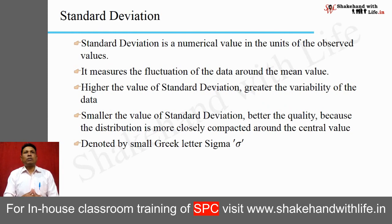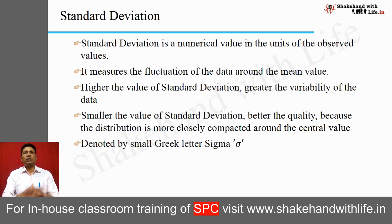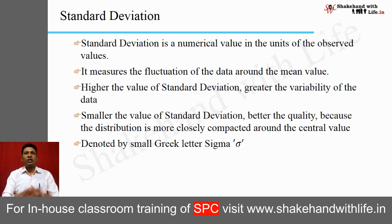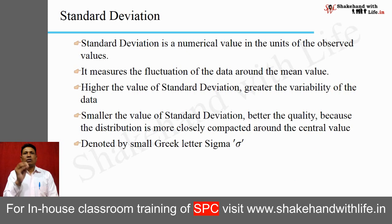The second important measure of variability is standard deviation. Standard deviation is a numerical value in the units of the observed values — for example, millimeters or milligrams. It measures the fluctuation of the data around the mean value; the deviation of each individual value from the mean can be calculated using standard deviation. Higher standard deviation means greater variability; smaller standard deviation means better quality, as the distribution is more closely compacted around the central value. It is denoted by the small Greek letter sigma (σ).